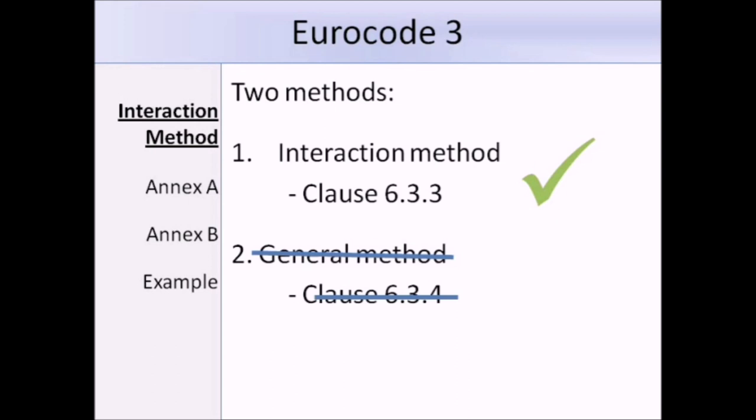In Eurocode 3, there are two methods which we could use when dealing with Uniform Members in Bending and Axial Compression. These are the interaction method in Clause 6.3.3 or the general method in Clause 6.3.4. For the purpose of this lecture, I will only be looking at the interaction method.